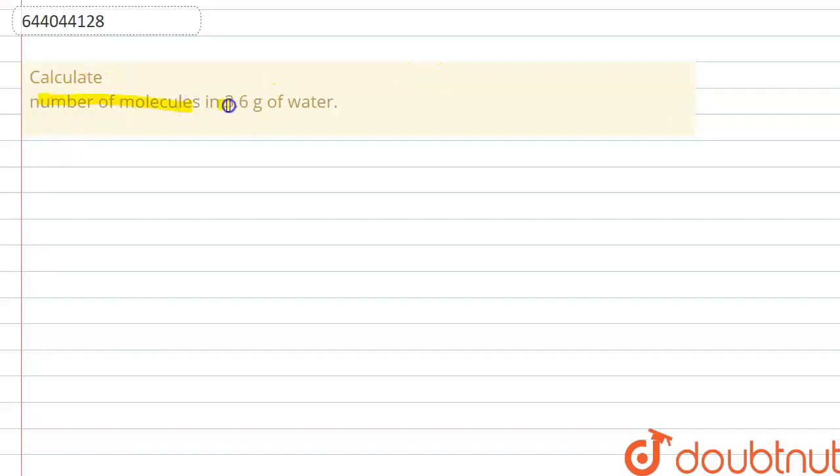the number of molecules in 3.6 grams of water. So in this question, they have asked us to calculate the number of molecules in 3.6 grams of water. The given mass of water, H2O, is 3.6 grams.